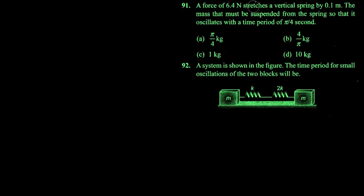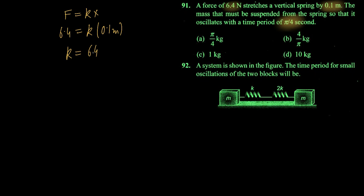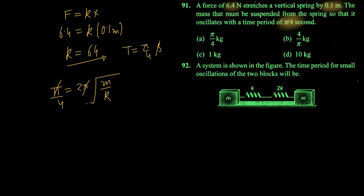A force of 6.4 newtons stretches a vertical spring by 0.1 meter. Find the mass that must be suspended so that it oscillates with a time period of π/4. Given force and elongation, you can find the spring constant k. Then using T = 2π√(m/k) with T = π/4, the π terms cancel and with k = 64 N/m, we get mass = 1 kg.